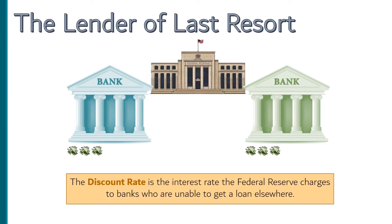The interest rate the Fed charges banks is called the discount rate. By providing emergency loans, the Fed is able to prevent a financial panic from bringing down bank after bank like dominoes as a run spreads through the financial system.